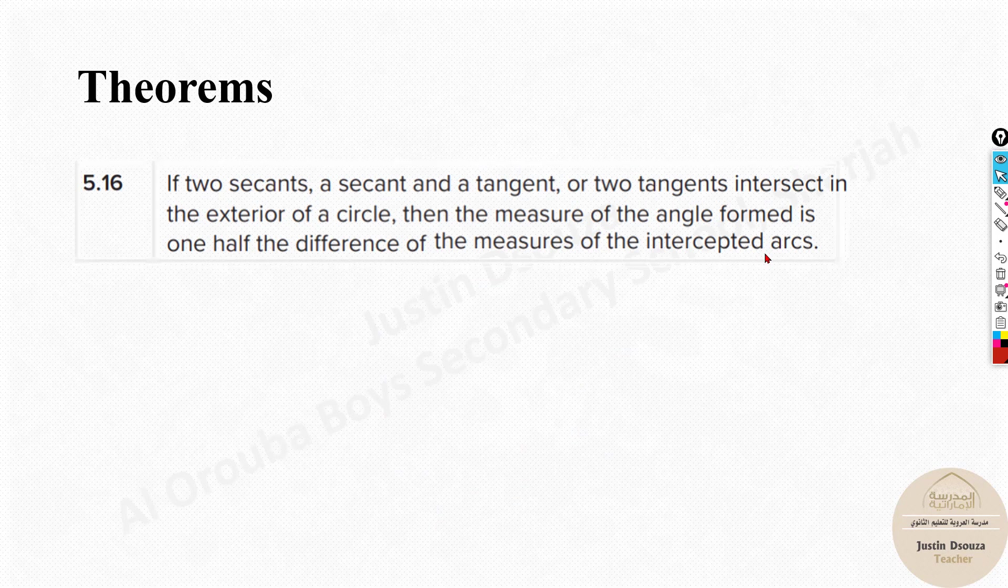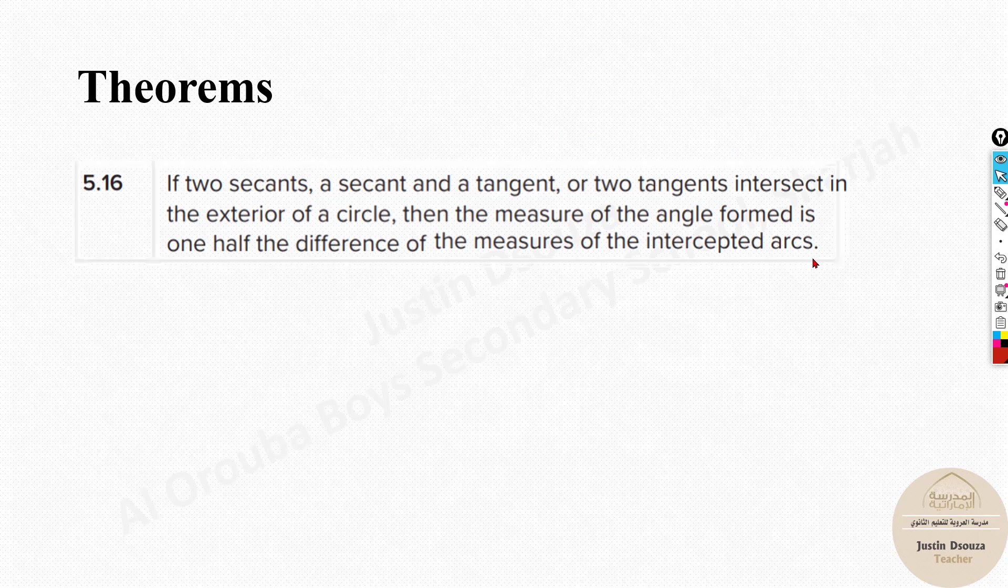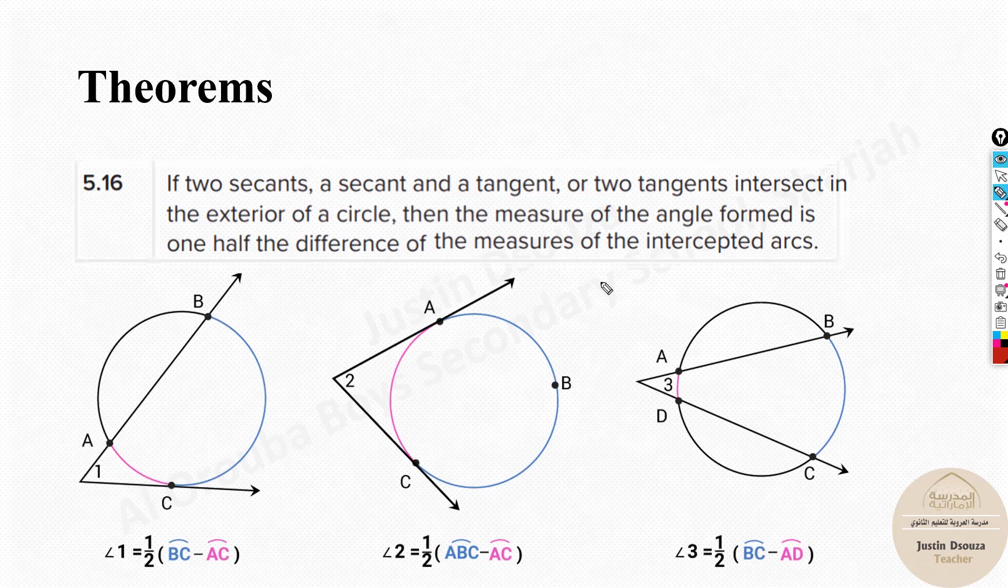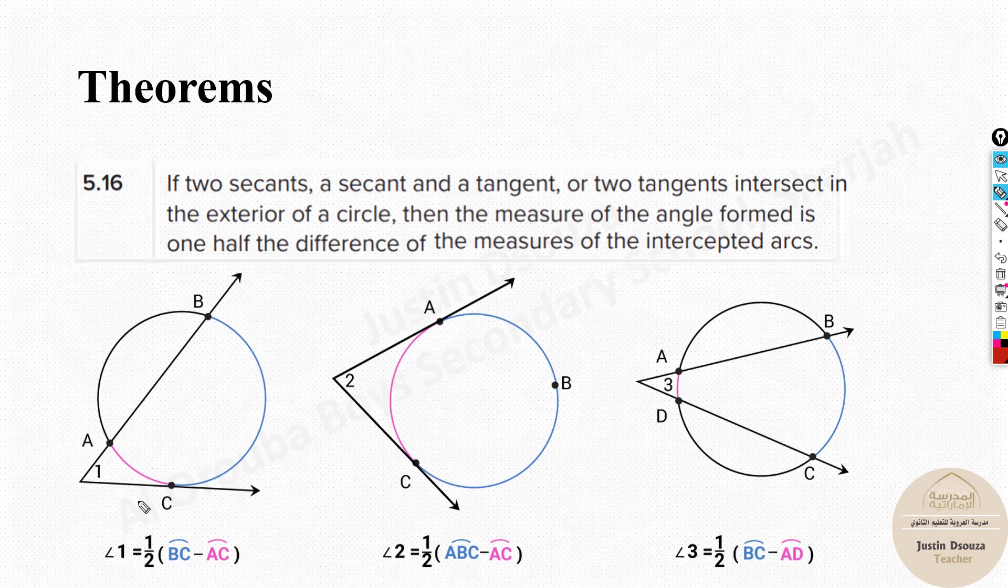And then we have the last one. If two secants, a secant and tangent line, or two tangents intersect outside the circle. Now here we can see the intersecting points of the two tangents or secants or a tangent and a secant is all outside the circle. In such cases, we need to remember, we need to take half of the outer arc, the bigger arc minus the inner arc. So this BC, which will be bigger minus the inside arc, that will give you the answer. So this is how we basically solve the problems here.